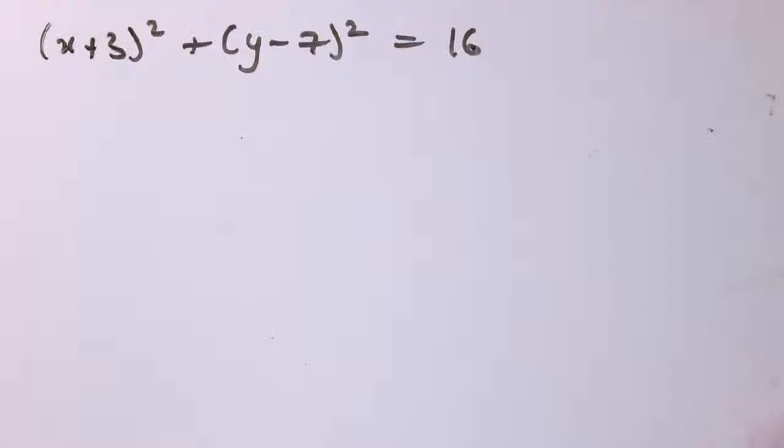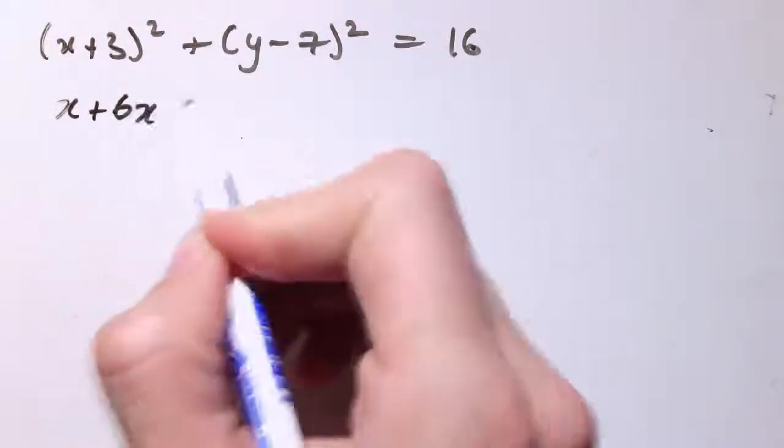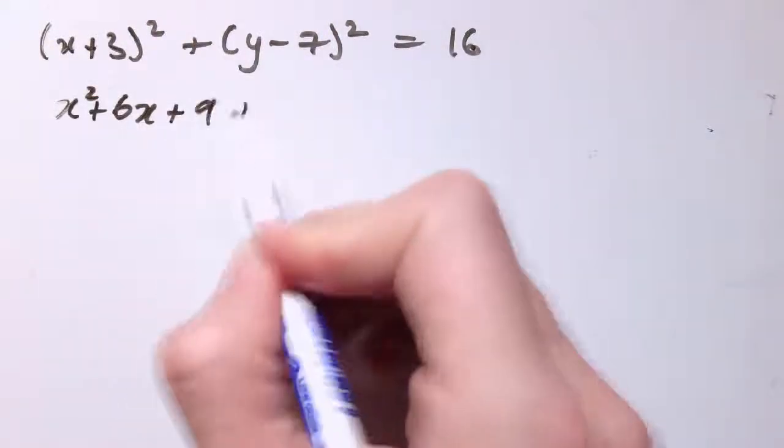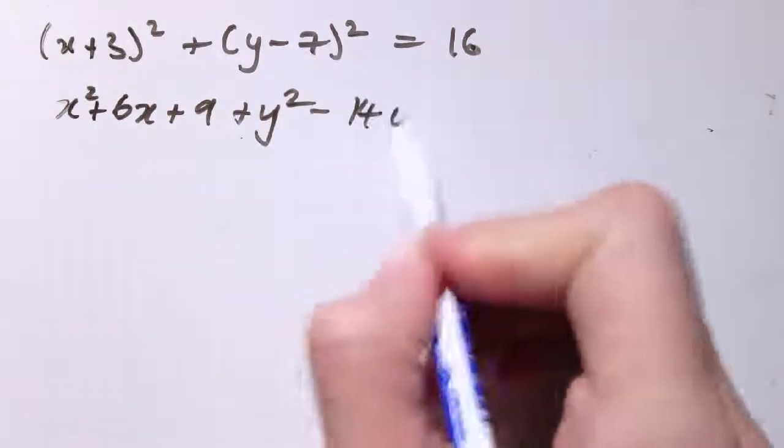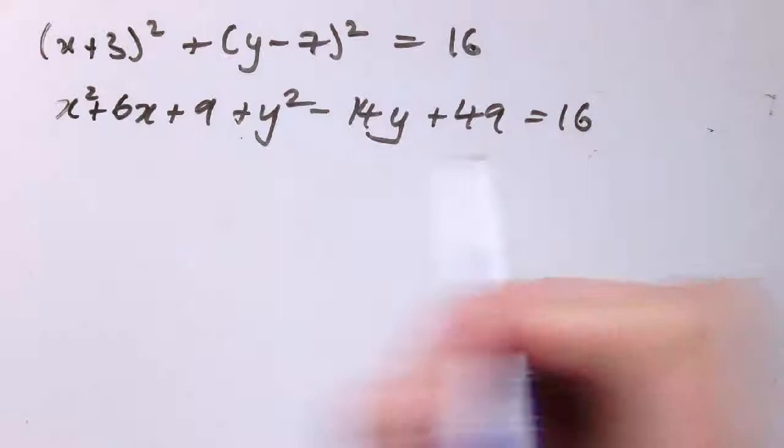Now let's take that last circle and of course we could write this in different forms as well. I could multiply this out. I could say that x plus 3 squared, well that's x squared plus 6x plus 9 plus y squared minus 14y plus 49 equals 16.